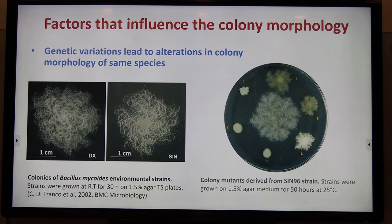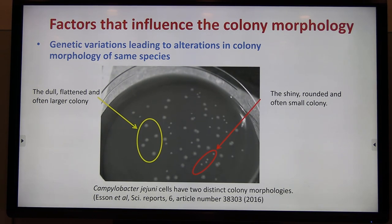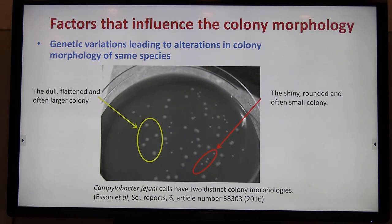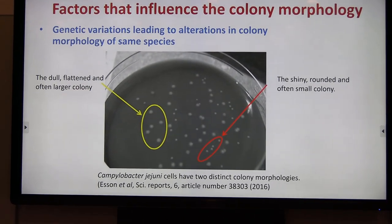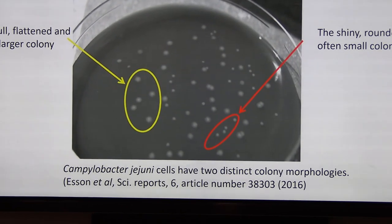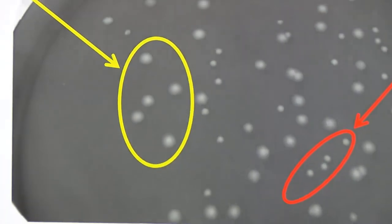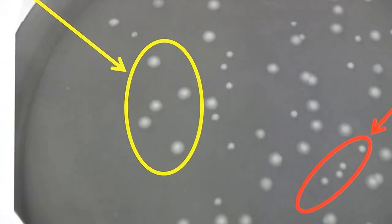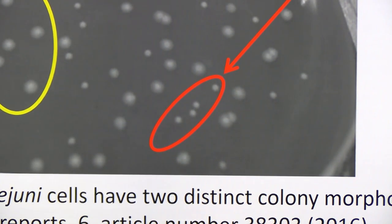Another example can be seen in this Campylobacter plate. There are two different colony types. The first group is large — they are more dull and flattened. On the right side, within the right circle, the colony is small with a more shiny and rounded appearance.